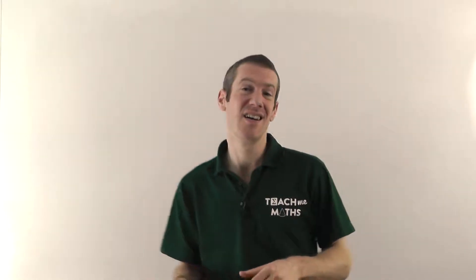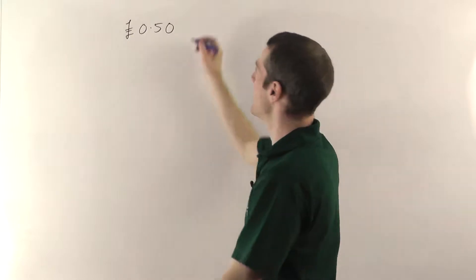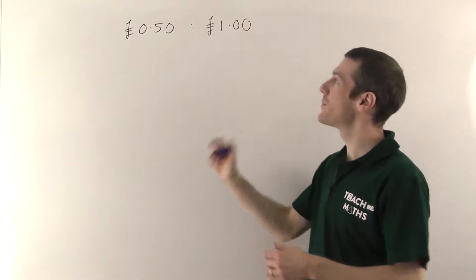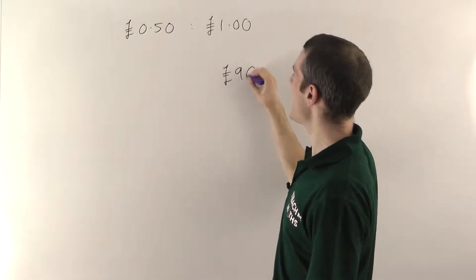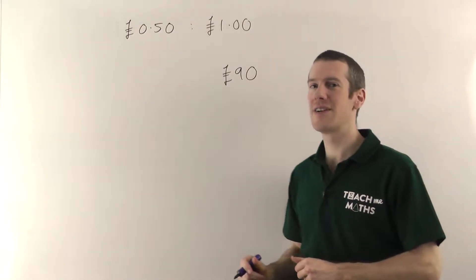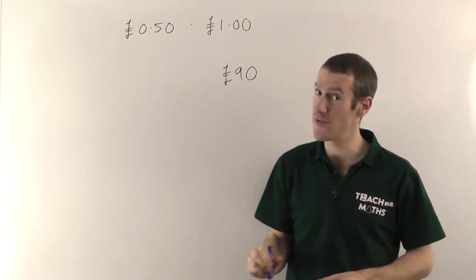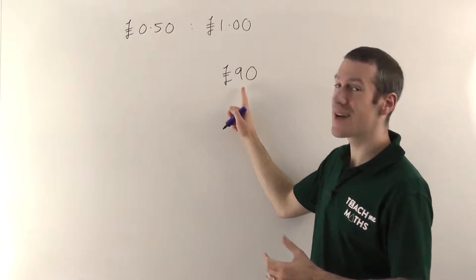For my first example, imagine me and my friend are kicking around on a Saturday morning, not sure what to do, so we decide to go out washing cars to earn a bit of extra cash. We see how much money we've got between us — I'm able to contribute a whopping 50p to this business venture, and my friend is a bit more flush than I am, he's got a whole pound. My friend says hang on a second, I put in twice as much money as you did in the initial investment, so I should get twice as much of the profits.